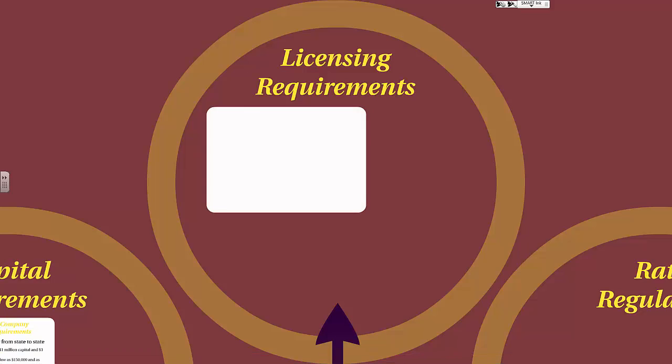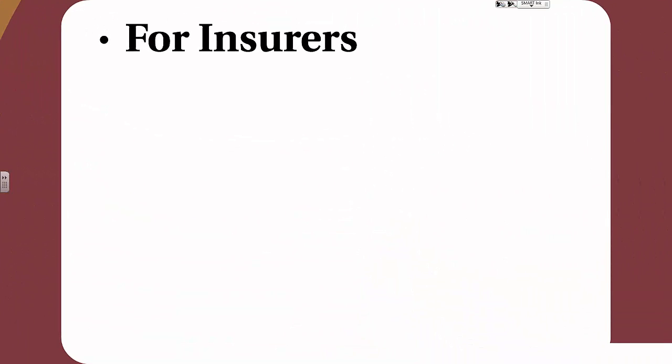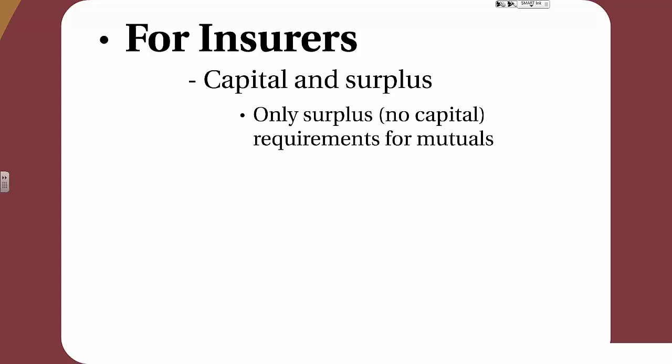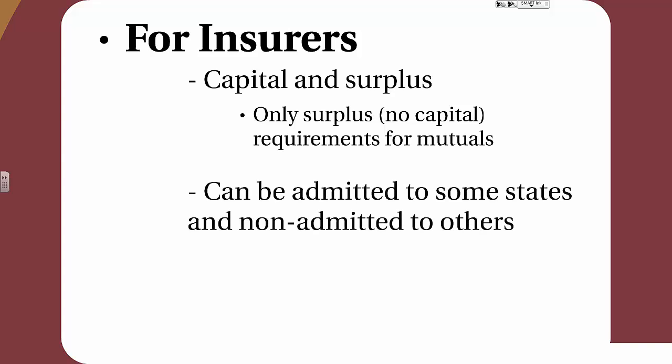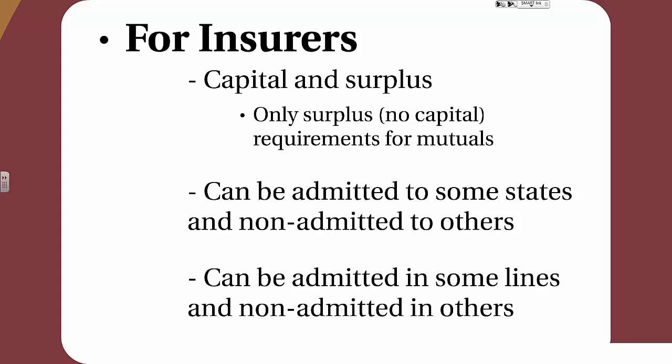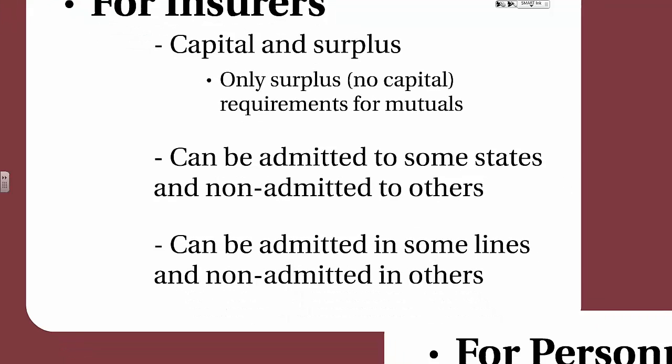Now let's discuss licensing requirements — first for insurers, then for personnel. In order to be licensed, insurers must meet their capital and surplus requirements — only surplus and not capital requirements for mutuals and reciprocals. An insurer can be admitted to some states and non-admitted to others. In order to be admitted in a state, an insurance company must complete many more steps and is subject to all types of regulation we're discussing today — such as rate regulation, contract regulation, and market conduct — whereas non-admitted insurers are not as closely regulated. Insurers can also be admitted in just some lines and non-admitted in others.